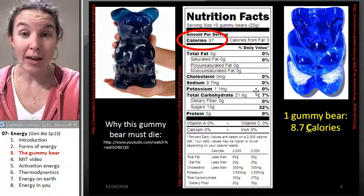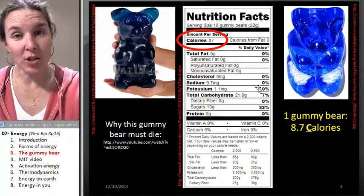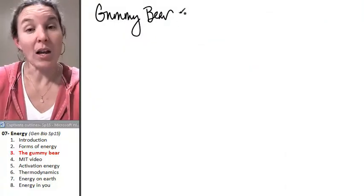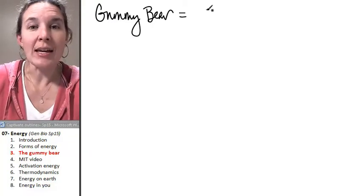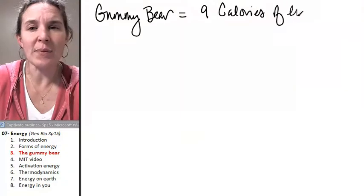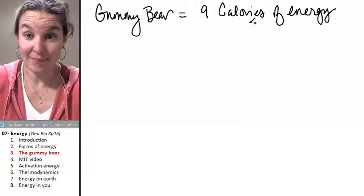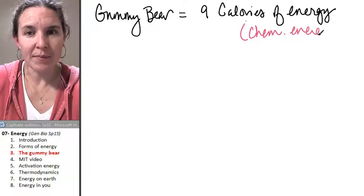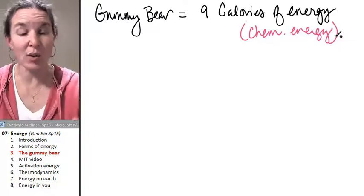Do you agree that the gummy bear contains energy, and we can measure the energy in calories? So let's define what a calorie exactly is. One normal sized gummy bear, not that jumbo thing, contains nine calories of energy. And if you had to guess what kind of energy is it? It's stored chemical energy. It's the energy inside that gummy bear stored in its chemical bonds.